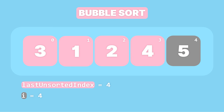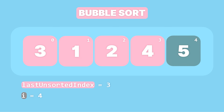After our first traversal, the largest element is now at the end of the array, so we set the last unsorted index to 3, as we consider the element at index 4 to be sorted. To continue, we set i to 0 to start a new traversal, but this time with the last unsorted index set to 3.